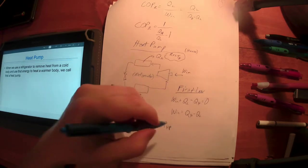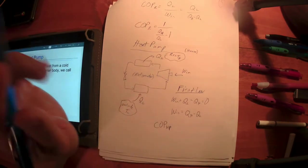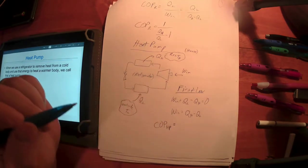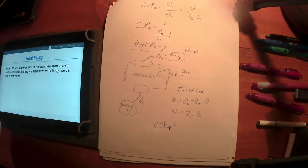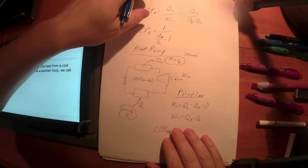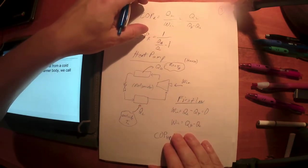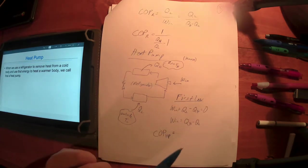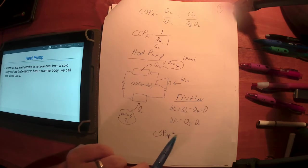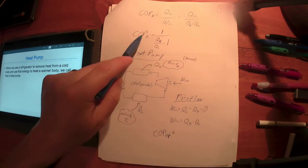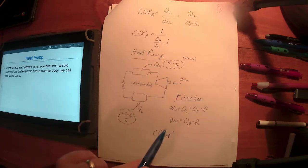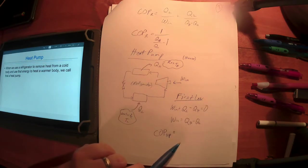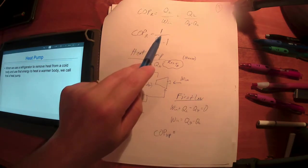When we talk about a heat pump, we don't call it an efficiency because this value will always exceed one. The coefficient of performance, the COP for a heat pump, is always greater than one. We don't call it an efficiency because it's always greater than one, but it is still a unitless quantity.